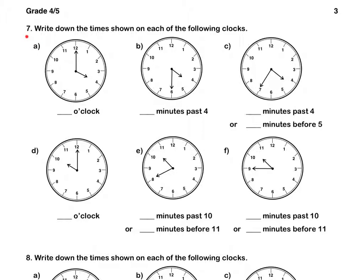Question 7. Write down the times shown on each of the following clocks. A. It is 4 o'clock. For B, the hour hand is still on the 4 and now it is 30 minutes past 4. For C, now it is 35 minutes past 4 or it is 25 minutes before 5 o'clock. Pause this video to complete question 7.